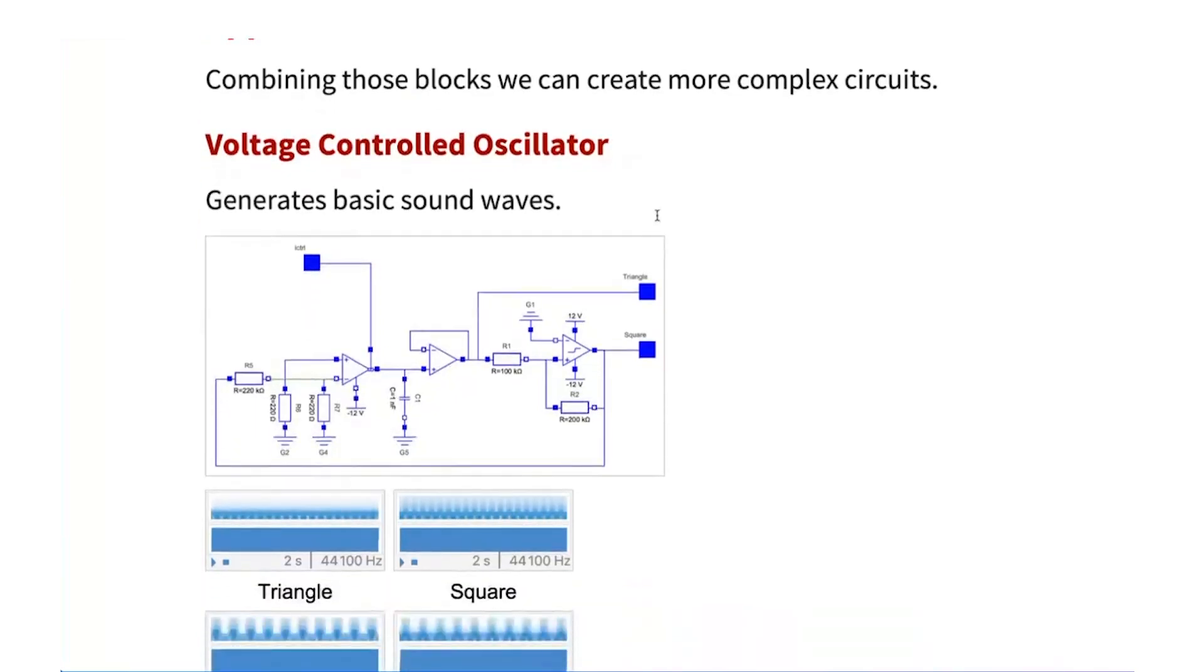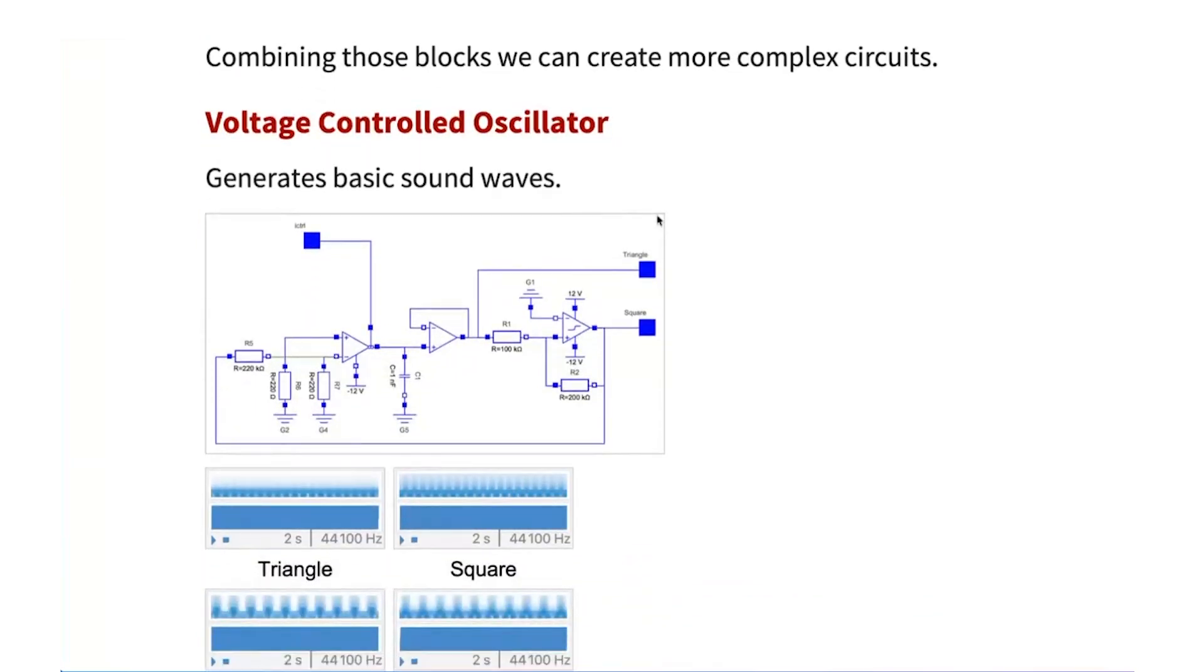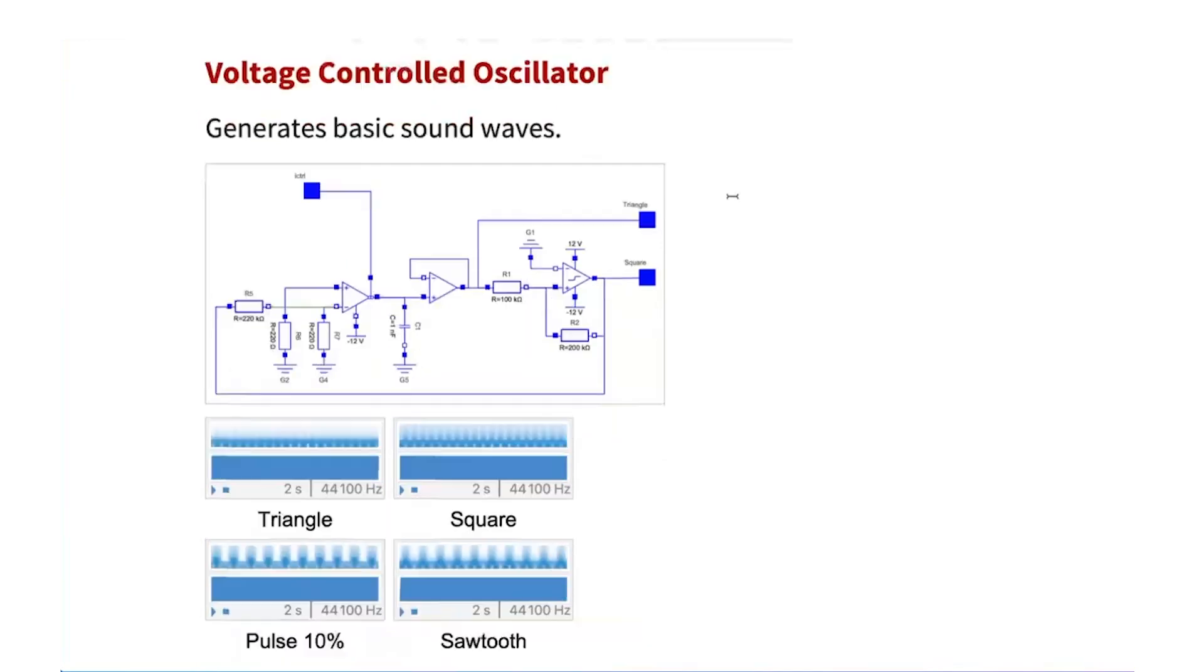For example, in the course, one of my favorite applications is, as I mentioned, music technology. So many examples have to do with sound generation. And here we can see a circuit of a voltage controlled oscillator, which is basically a circuit that generates sound waves. And it uses three operational amplifiers. And we can actually simulate the circuit and hear how it will sound.